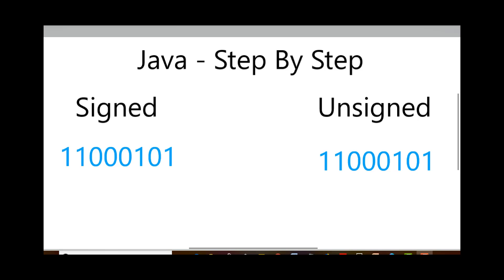Let's see what signed and unsigned means in Java, what system is followed, and how it affects the value of a variable. Taking an example of an 8-bit variable, the same variable is considered once as unsigned and once as signed. The difference it makes is to the value of the variable. In signed, you have values ranging from the negative to the positive side. In unsigned, you do not have any negative values — all values are positive.